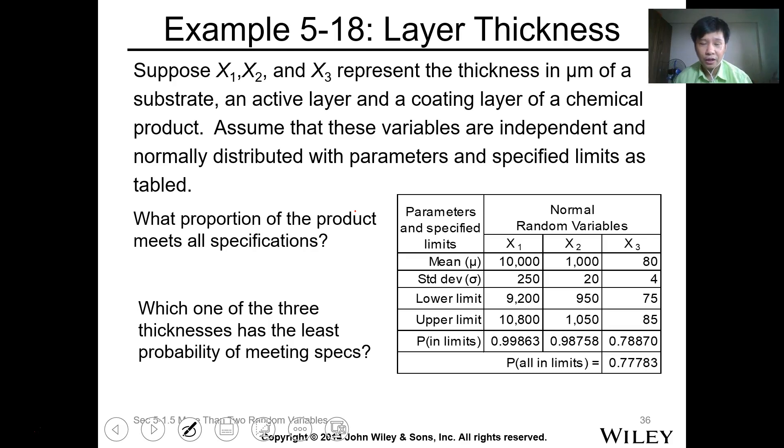Let's turn to an example. We're using discrete probability distribution. Suppose we have three parameters x1, x2, and x3 representing the thickness in micrometers of a substrate, an active layer, and a coating layer of a chemical product. Assume that the variables are independent and normally distributed.